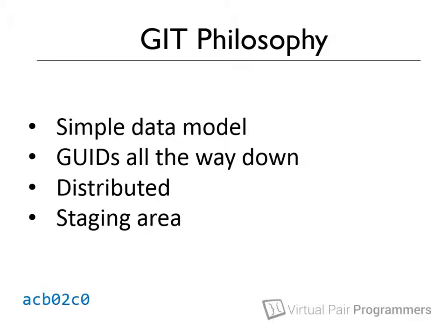You can think of Git as an API for enabling a versioning workflow. It doesn't have strong opinions about what file structure you use or what the lifetime of a branch should be. You can use Git however it suits you best. One of the aims of this course is to help you become familiar enough with Git that you can tailor its use to fit in perfectly with your code structure and the processes that you already have in place.